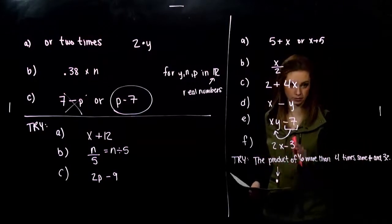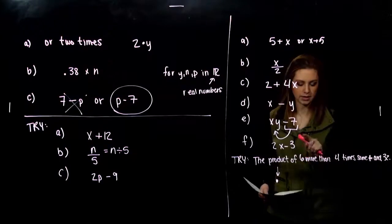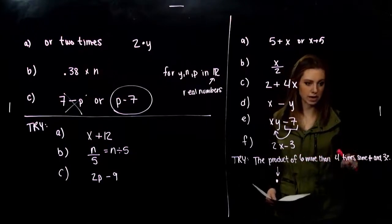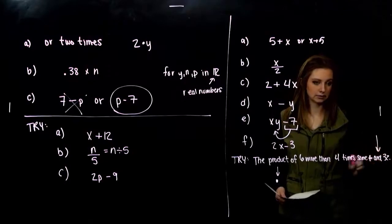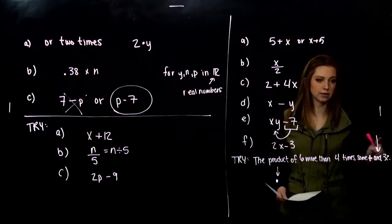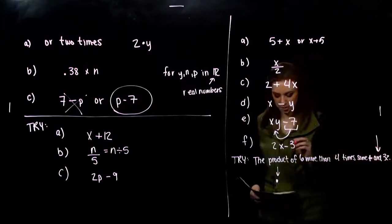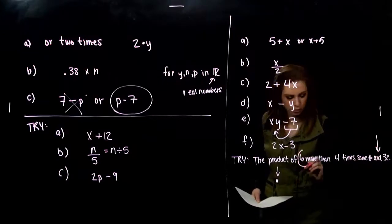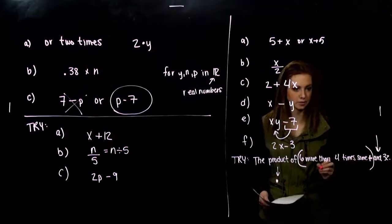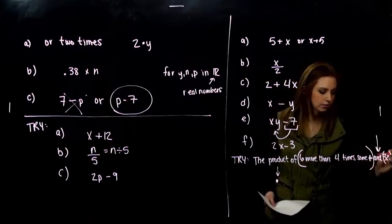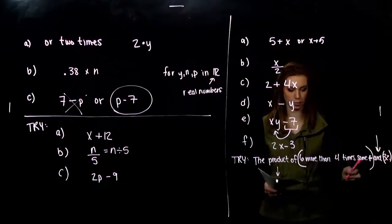The product of. So something that's coming. I need two parts. Six more than four times some number. And. That should be your big indication. And 32. So what am I multiplying together? Six more than four times some number. That's my first group that's being multiplied. And 32. That's the other part.